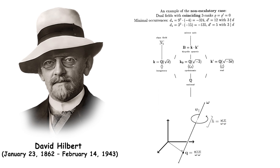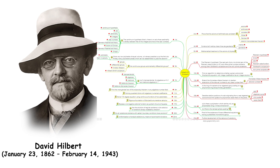David Hilbert was a German mathematician whose work in invariant theory, algebraic number theory, and the foundations of geometry has profoundly influenced modern mathematics. He formulated Hilbert's problems, a list of 23 unsolved problems that guided much of 20th century mathematical research. Hilbert's space theory is fundamental in functional analysis and quantum mechanics.